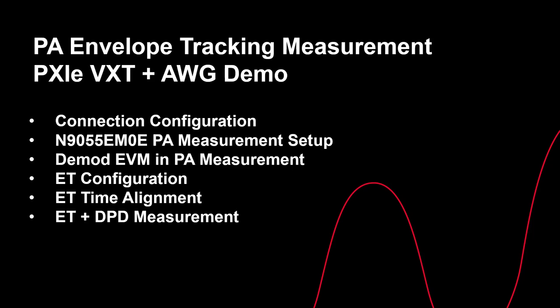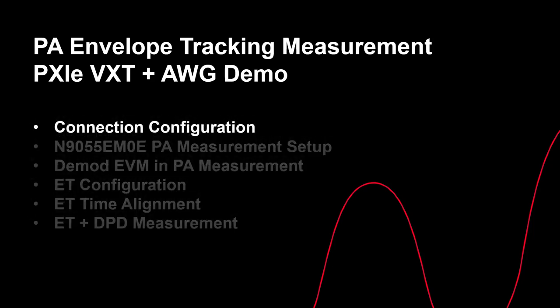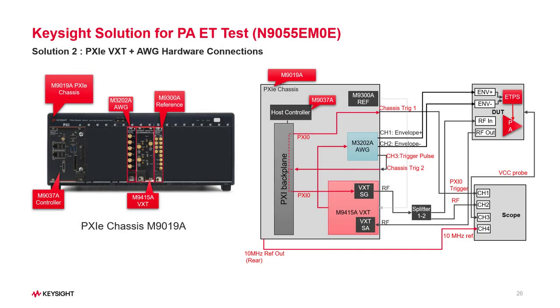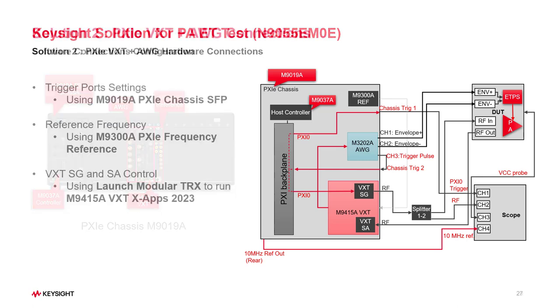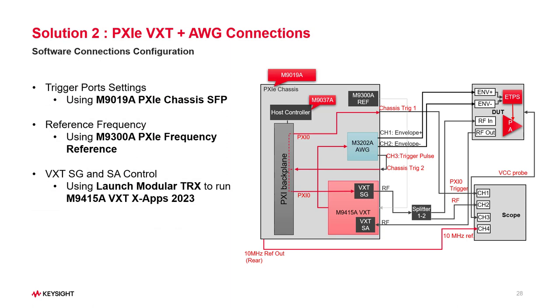Now I will give you a live demo. This demo is based on Solution 2 — the modular instruments. You will learn several features in this demo. Let's start with connection configuration. Before doing the PA ET test, you need to do the cable connection as shown in the diagram. After that, you need software to configure the hardware interface. In the next live demo, you will see how to use software to configure trigger port settings, reference frequency, and the VXT transceiver module.